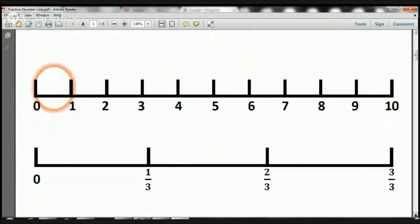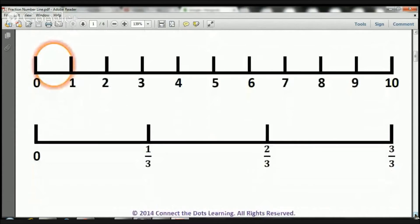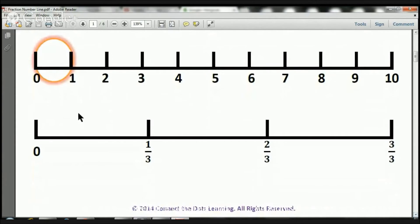The next one, we're going to be taking a look at thirds. One-third, two-thirds, and three-thirds. Remember, we're looking at this number line here that goes to 10, but we're only going to look at this piece right here, from zero to one, and we're going to break this up into three pieces.